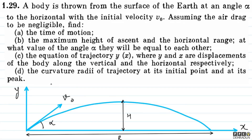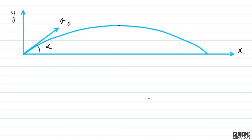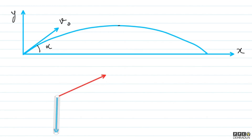Now coming to part D: the curvature radii of the trajectory at its initial point and at its peak. To find radius of curvature, we need to find the component of acceleration perpendicular to the velocity. If velocity is in one direction and acceleration is at an angle, we take the component of acceleration perpendicular to the velocity.